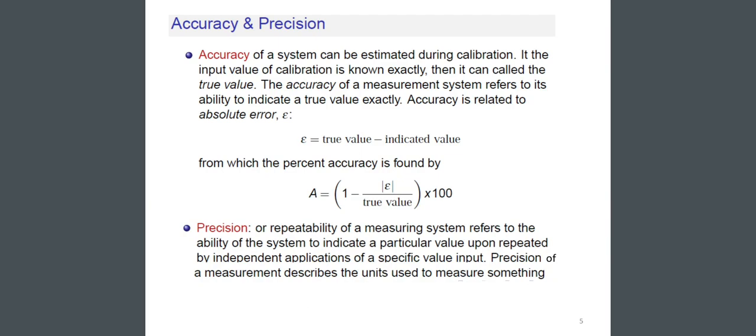The accuracy of a measurement system refers to its ability to indicate a true value exactly. Accuracy is related to absolute error ε. ε = true value - indicated value. From which the percent accuracy is found by: A = (1 - ε/true value) × 100.